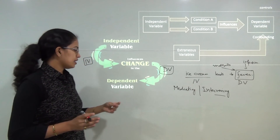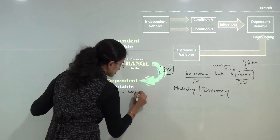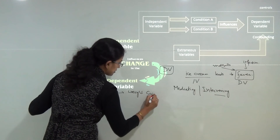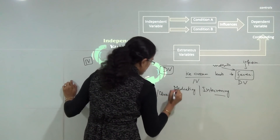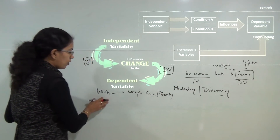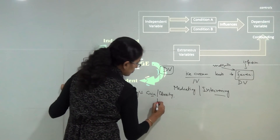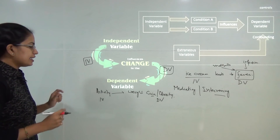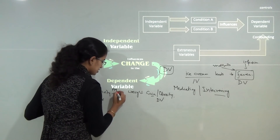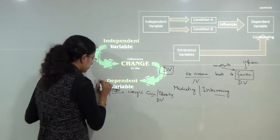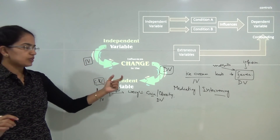Another example: activity level leads to weight gain, or activity level determines obesity in children. So obesity is dependent on activity level — activity level is the independent variable, obesity is the dependent variable — and if I include an extra parameter, say age, this age would become the confounding variable. The confounding variable is the extra variable we talk about here.